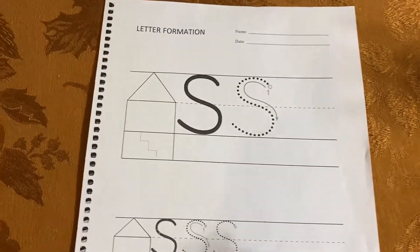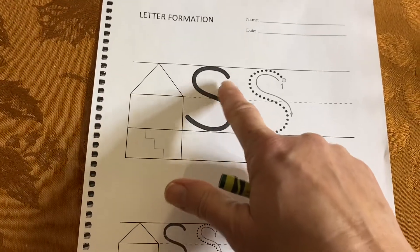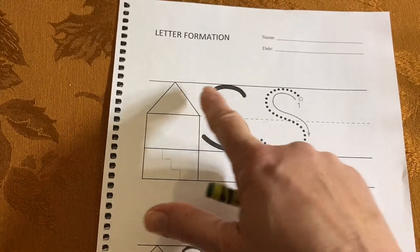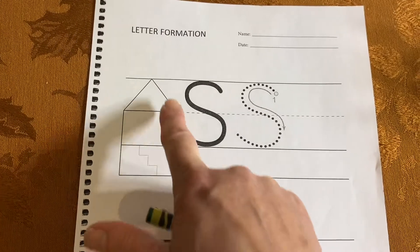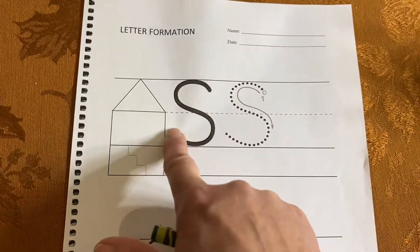This is how we write the uppercase S. Take a look first. We see that the uppercase S is in the upstairs and the downstairs, both the attic and the main floor.